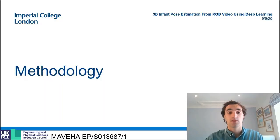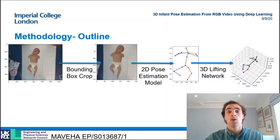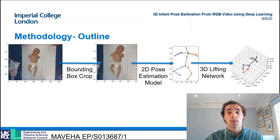Next, the methodology used. Three distinct deep learning models have been trained for this project consisting of a Faster RCNN bounding box model, a 2D pose estimation model based on the work of Zhao et al., and a 3D lifting network adapted from Martinez et al.'s paper.